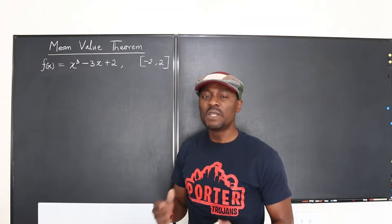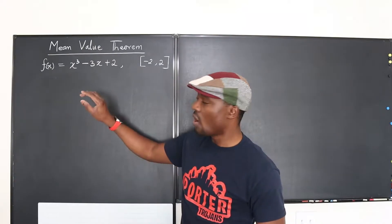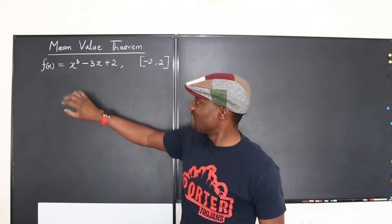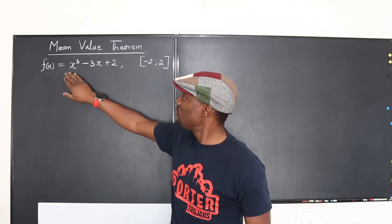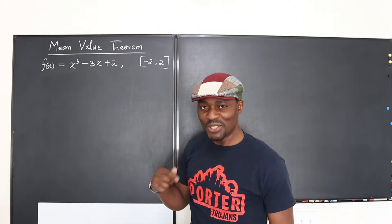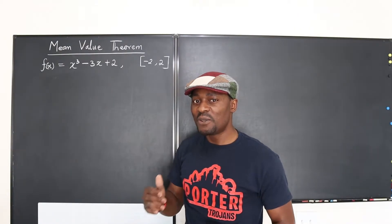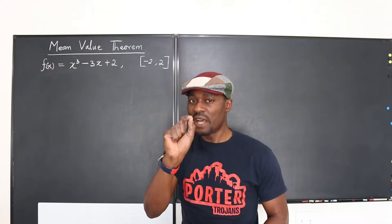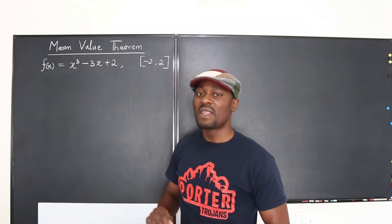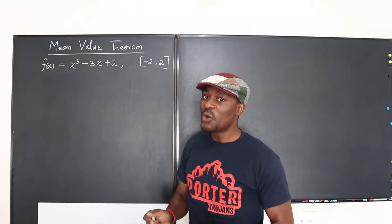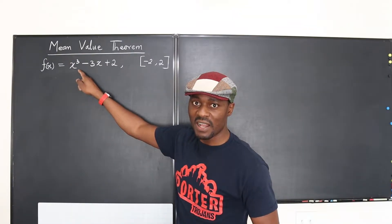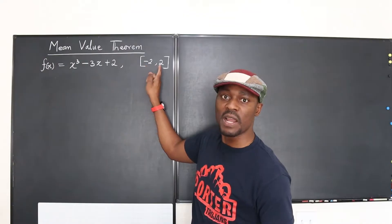Usually all we're looking for is a point on a function that has the same slope as the slope you would get if you treated this function as a straight line. The mean value theorem is saying: look for that point on this function that has the same slope as the slope you would get if you treated this function as a straight line between the points negative 2 and 2.